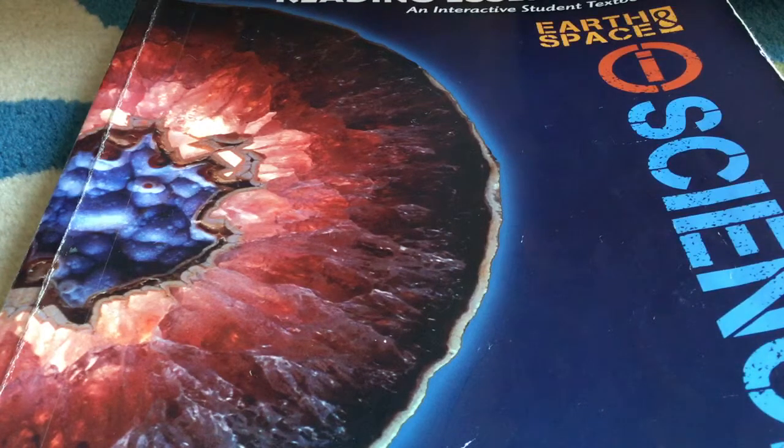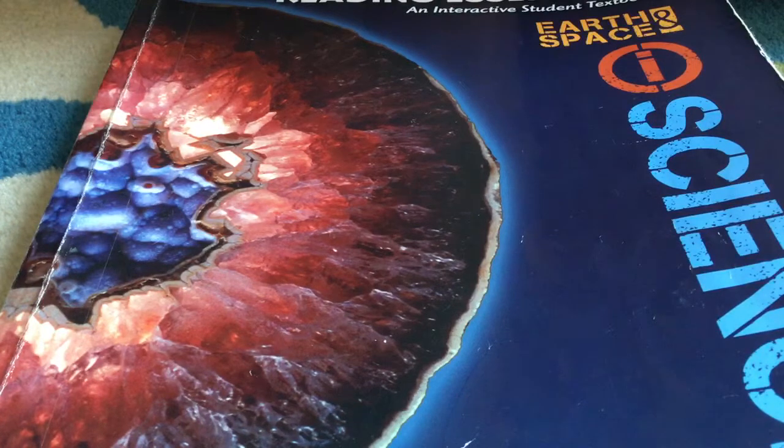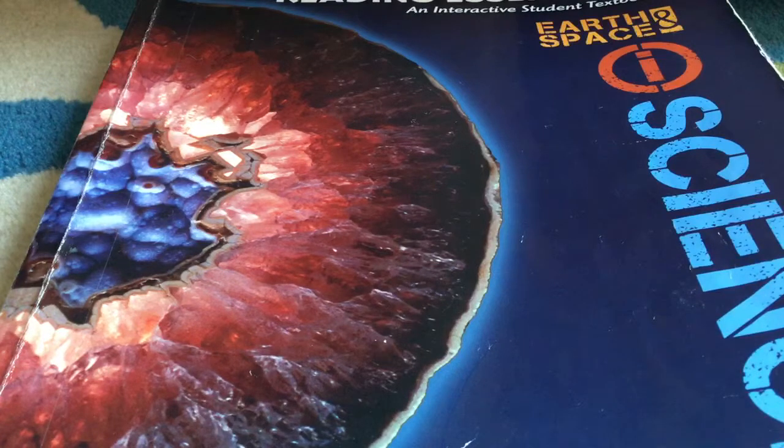Natural Resources, Chapter 18, Land Resources, Lesson 3, Land as a Resource. A natural resource is something from earth that living organisms use to meet their needs.